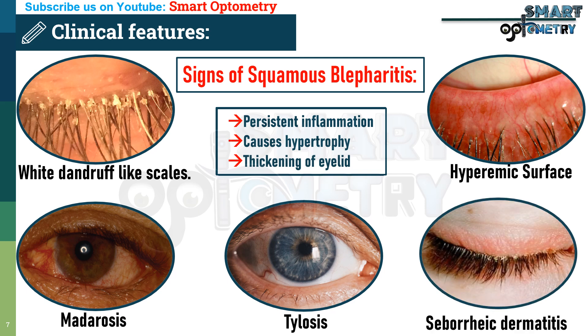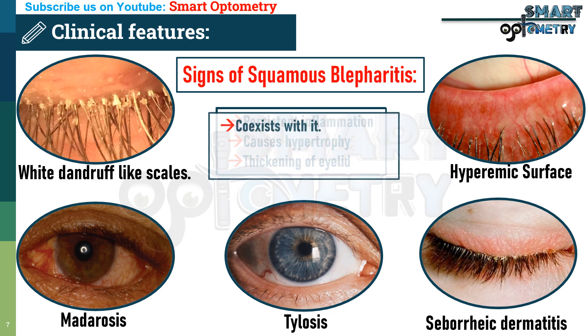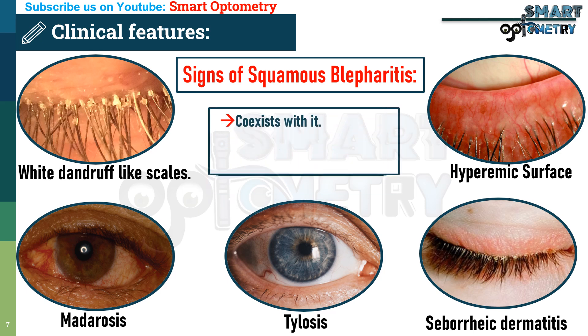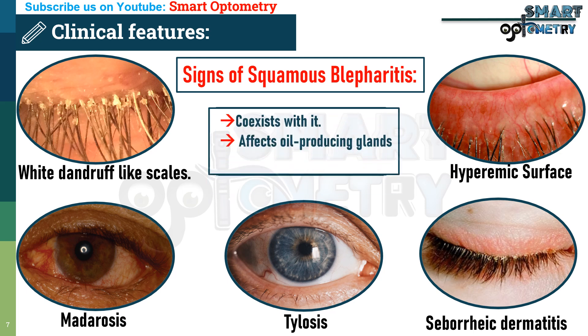Associated seborrheic dermatitis of the scalp: blepharitis often coexists with seborrheic dermatitis, a condition that affects areas with oil-producing glands, including the scalp.